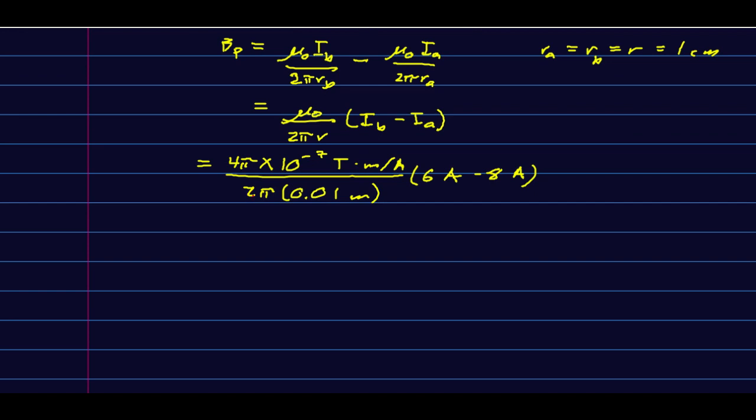And at that point, you can practically do this in your head, because this cancellation means you just have 2 times 10 to the negative 7 over 0.01, 2 times 10 to the negative 5 times negative 2. So negative 4 times 10 to the negative 5. And look at the units, meters, amps, and we just get Teslas as we should. And so our B field is into the page, negative 4 i hat times 10 to the negative 5 Tesla.